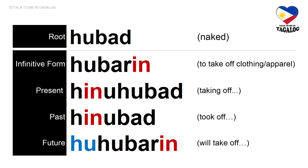Root word: hubad — meaning naked. Infinitive form: hubarin — to take off clothing or apparel. Present tense: hinuhubad — taking off clothing or apparel. Past tense: hinubad — took off clothing. Future tense: huhubarin — will take off clothing.